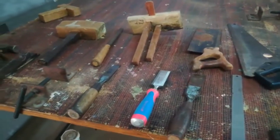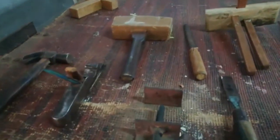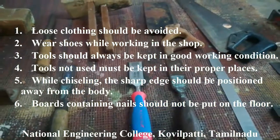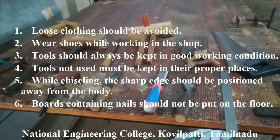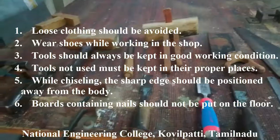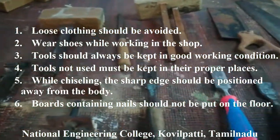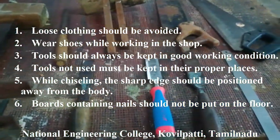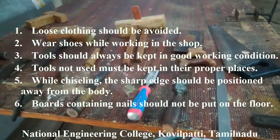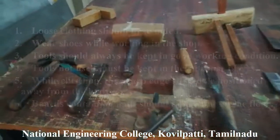Before seeing the tools, we have to follow some rules and regulations inside the carpentry shop. The first and foremost rule is to avoid loose clothing, and second, we have to wear shoes. Tools should always be kept in good working condition and placed in a proper place. While chiseling or using any other sharp tools, the sharp edges should be positioned away from your body. Finally, if you find any boards containing nails, they should be disposed of in a proper place and not kept on the floor.